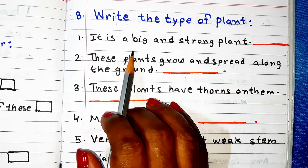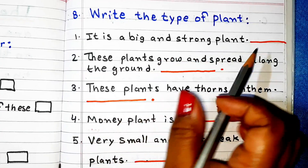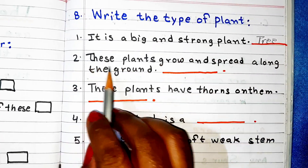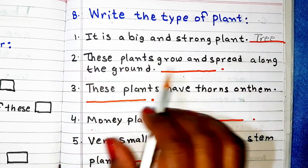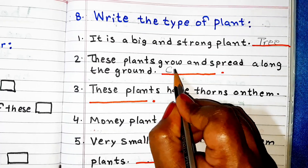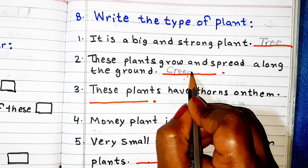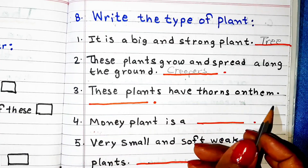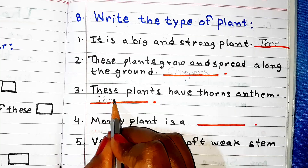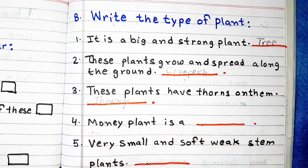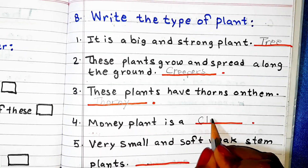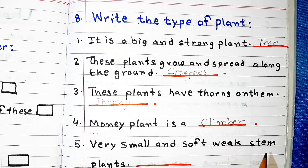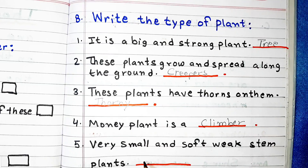It is a big and strong plant — it is a tree. These plants grow and spread along the ground — it is a creeper. These plants have thorns on them — they are thorny plants. Money plant is a climber. Very small and soft weak stem plants — it is a herb.